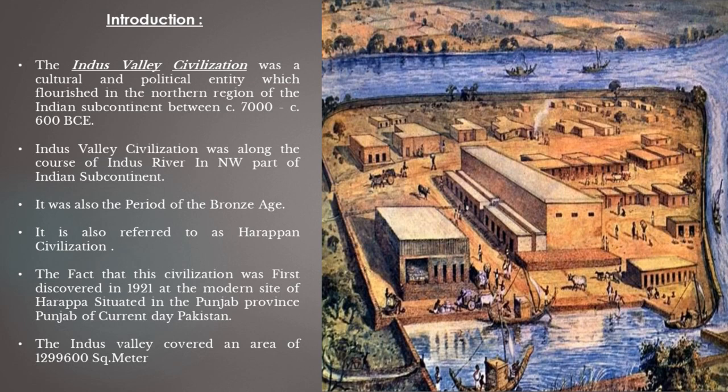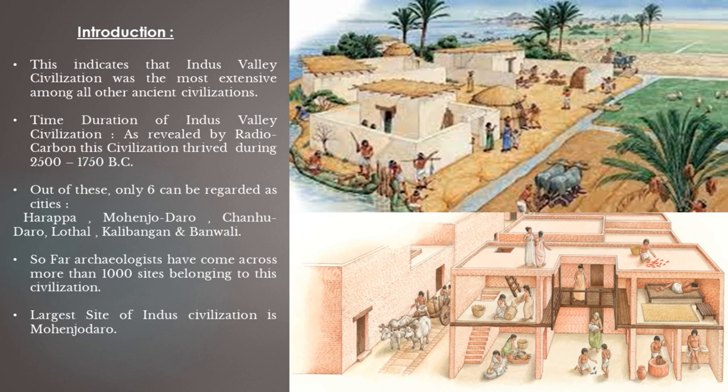This civilization flourished in the northern region of the Indian subcontinent, along the course of the Indus River. It is also referred to as the Harappan civilization, first discovered in 1921 at the modern site of Harappa in Punjab province, now in present-day Pakistan. The Indus Valley covered an area of 1,299,600 square meters, making it the most extensive of all ancient civilizations. It flourished from around 2,500 to 1,750 BC. The six most major cities were Harappa, Mohenjo-daro, Chanhu-daro, Lothal, Kalibangan, and Banawali. Archaeologists have found more than 1,000 sites, with Mohenjo-daro being the largest.